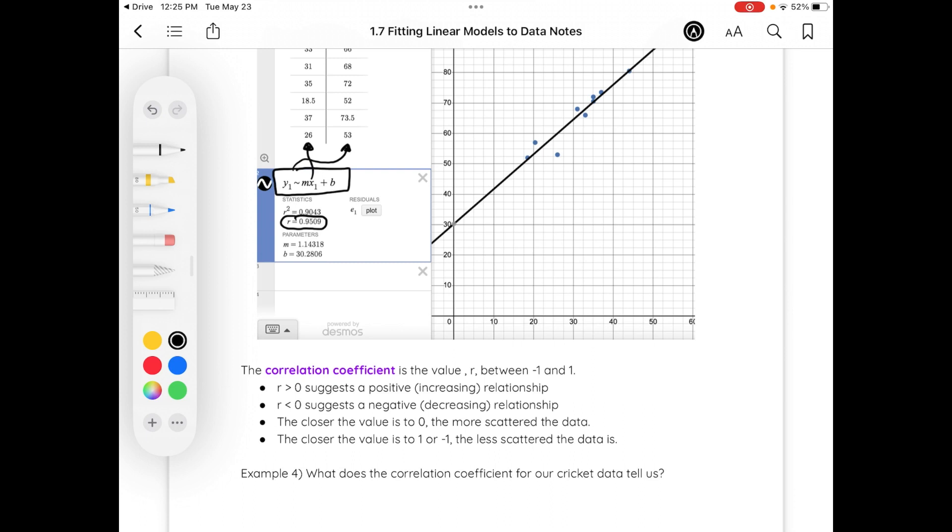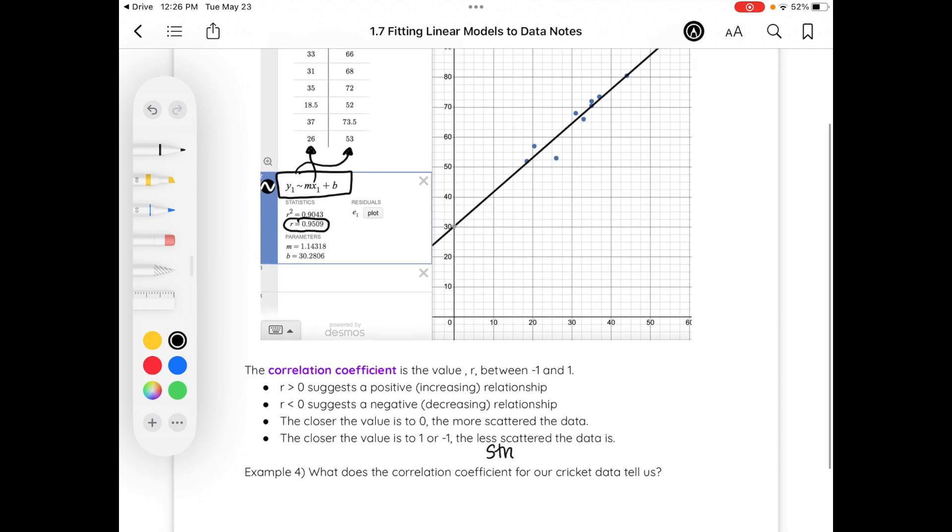However, the closer our value is to 1 or negative 1, the least scattered our data is and the stronger the relationship is. So in this particular case, 0.9509 is very close to 1. So this suggests a strong, linear, increasing relationship since it's close to 1 and it's positive.